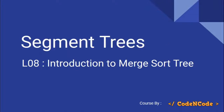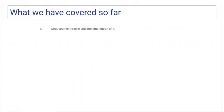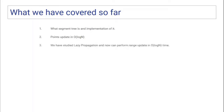Hello guys, this is CodeNCode and this is the eighth lecture of this segment tree series. In this lecture we are going to see and study what is merge sort tree. Before we start learning something new, let's recap what we have done till now. We have already studied what is segment tree, how to implement it, how to perform point updates in O(log n) time, and how lazy propagation is implemented and what is its use — we can update a whole range in O(log n) time. Based on these concepts we have also solved one or two problems from every concept.